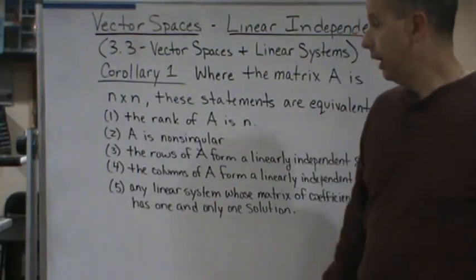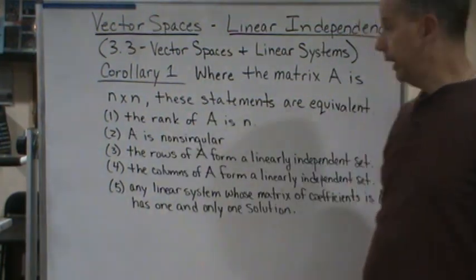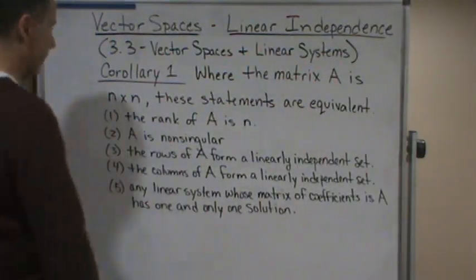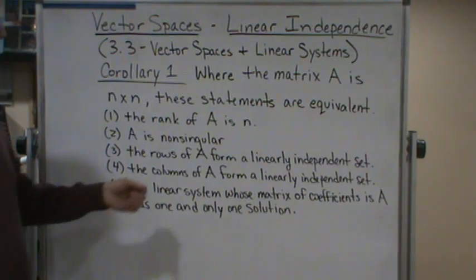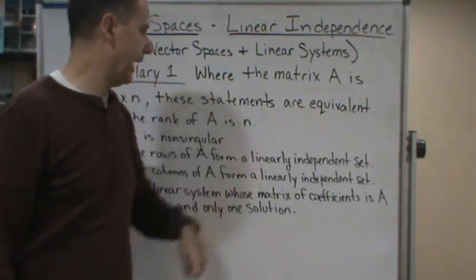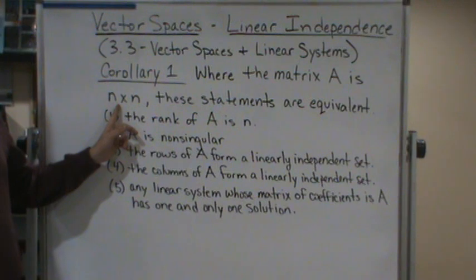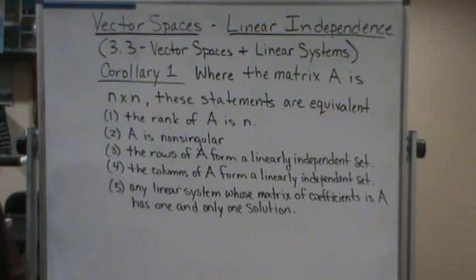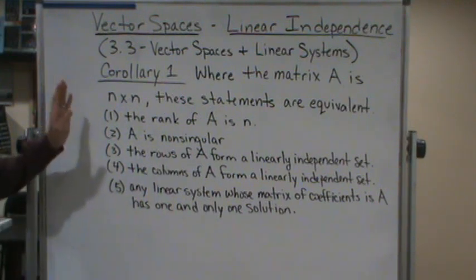Here is Corollary 1. We're going to go through these statements, but what this corollary says is where the matrix A is an n by n matrix, these statements are equivalent, which means if one of these statements is true, they're all true.